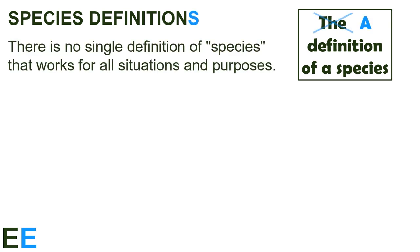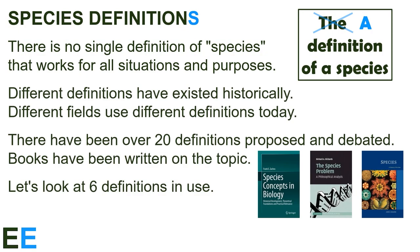In reality, there is no single definition of species that works for all situations and purposes. Instead of thinking about THE definition of a species, we should think about A definition of a species — which of several different definitions should we use? Different definitions have existed historically, and different fields use different definitions today. In fact, there have been over 20 different species definitions proposed and debated. Entire books have been written on the topic.